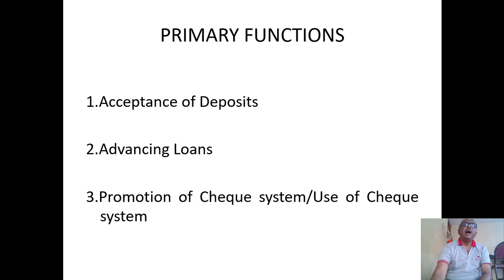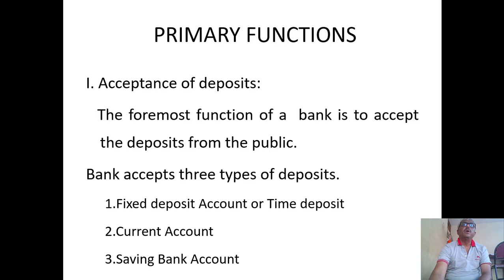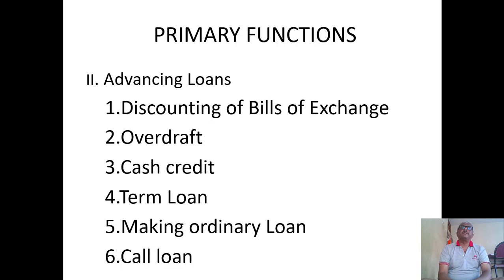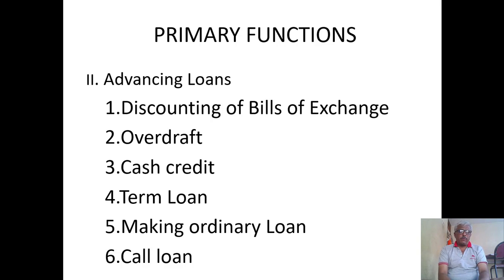The second primary function is advancing loans. Commercial banks advance loans in the form of discounting of bills of exchange. Whenever a party needs money immediately, the bank provides money by discounting the bills of exchange — this is a kind of advancing loan as a primary function to the customer.